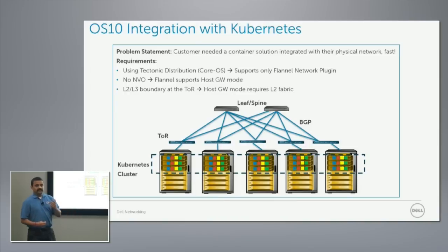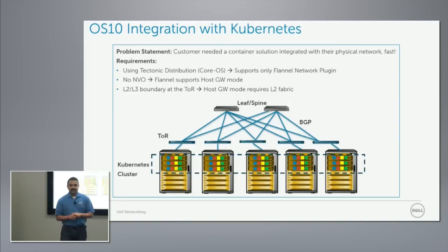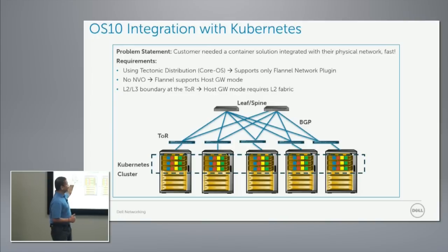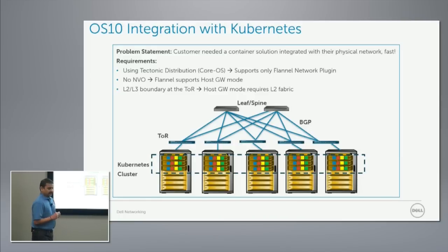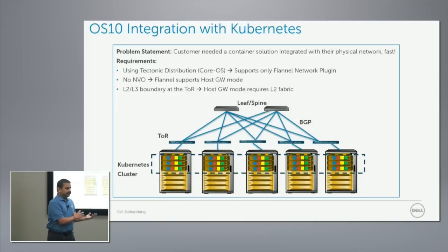Flannel supports a host gateway mode that removes the NVO requirement, but it requires an L2 network underlay. That's when we got engaged with the customer. The third requirement was that he needed an L3 network — he didn't want L2, which host gateway mode was proposing. He had previously built an L2 network two years back, then moved on to L3 with BGP on the ToR, leaf and spine, and did not want to go back to L2.